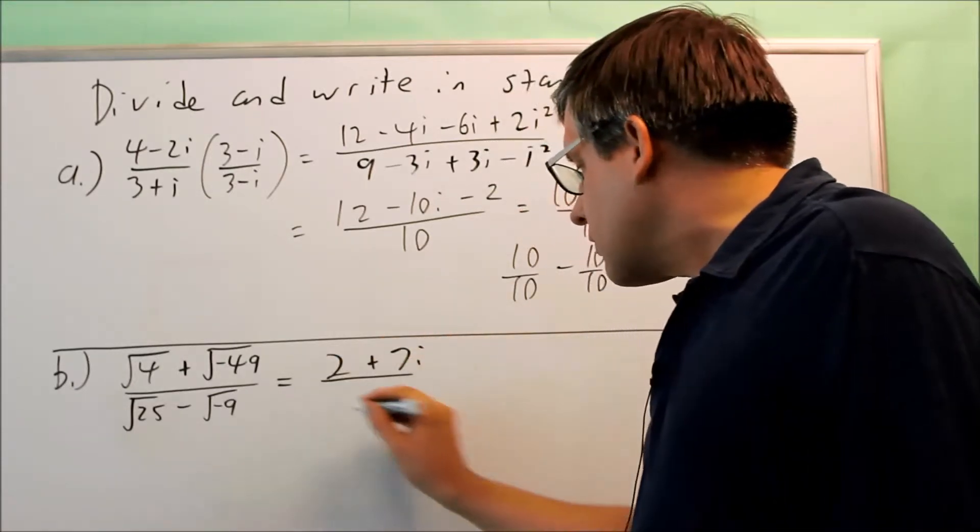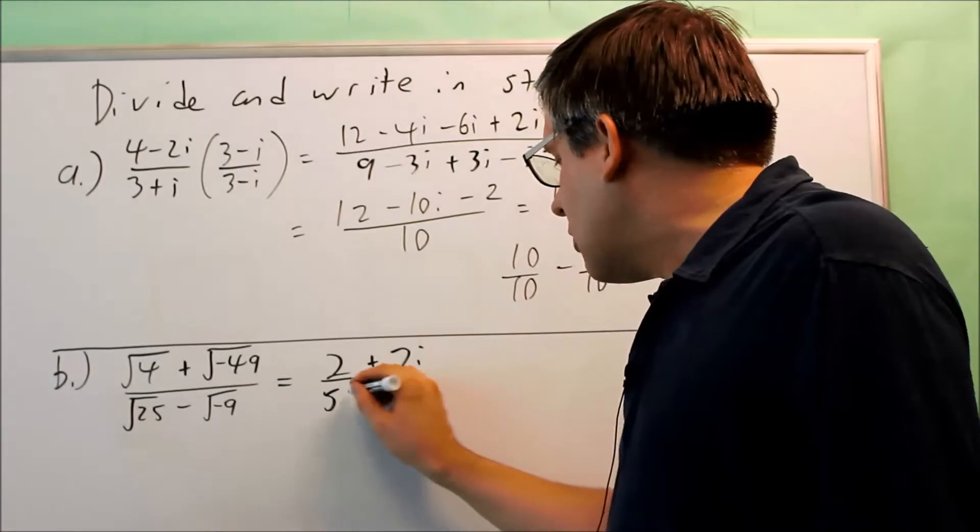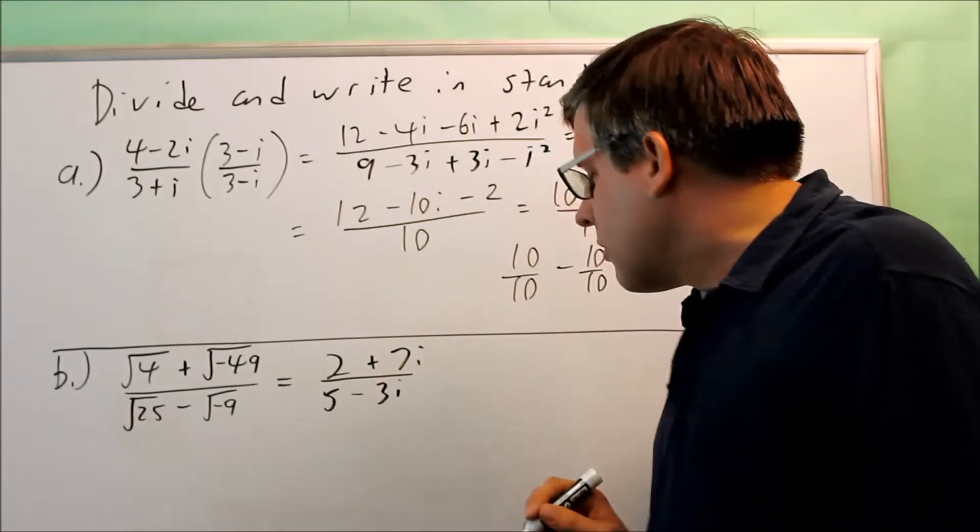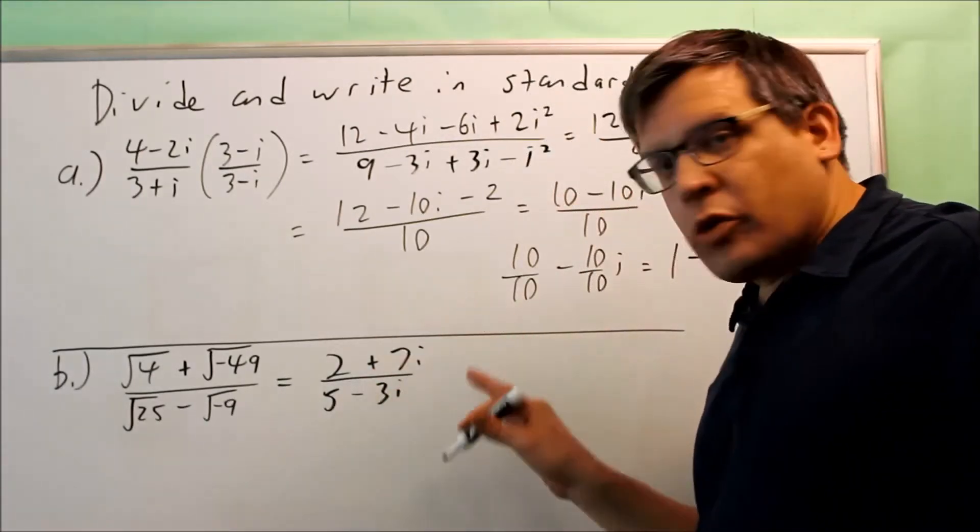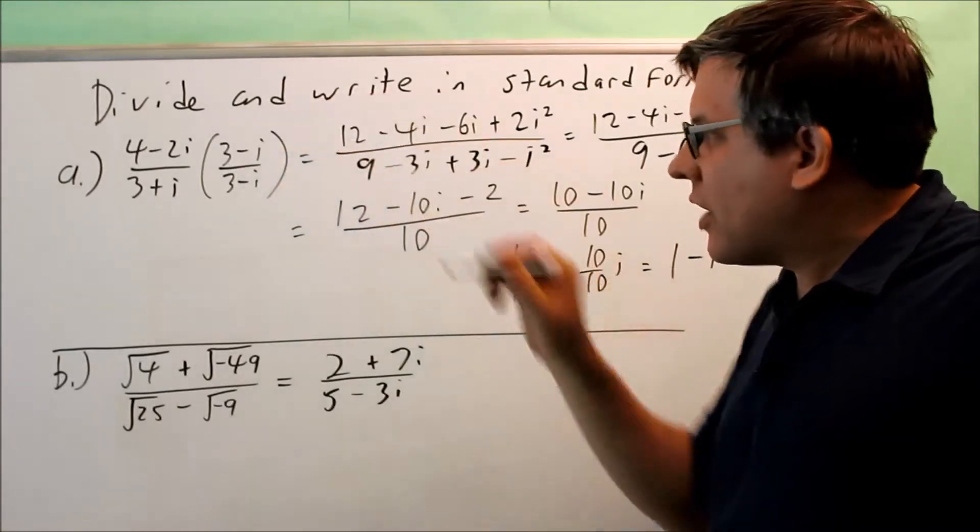And the bottom, that's 5. That's going to be minus 3i. So now that we have all the square roots are gone, we're ready to do the same process we had above.